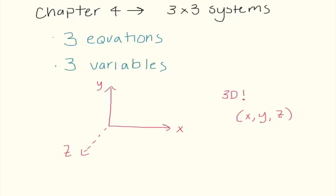Hey guys, Ms. Miklos here with the start of chapter 4. Chapter 4 is really building off of what we learned last chapter. Instead of 2 by 2 systems, this chapter we're working on 3 by 3 systems, so that means we're going to have 3 equations with 3 variables.